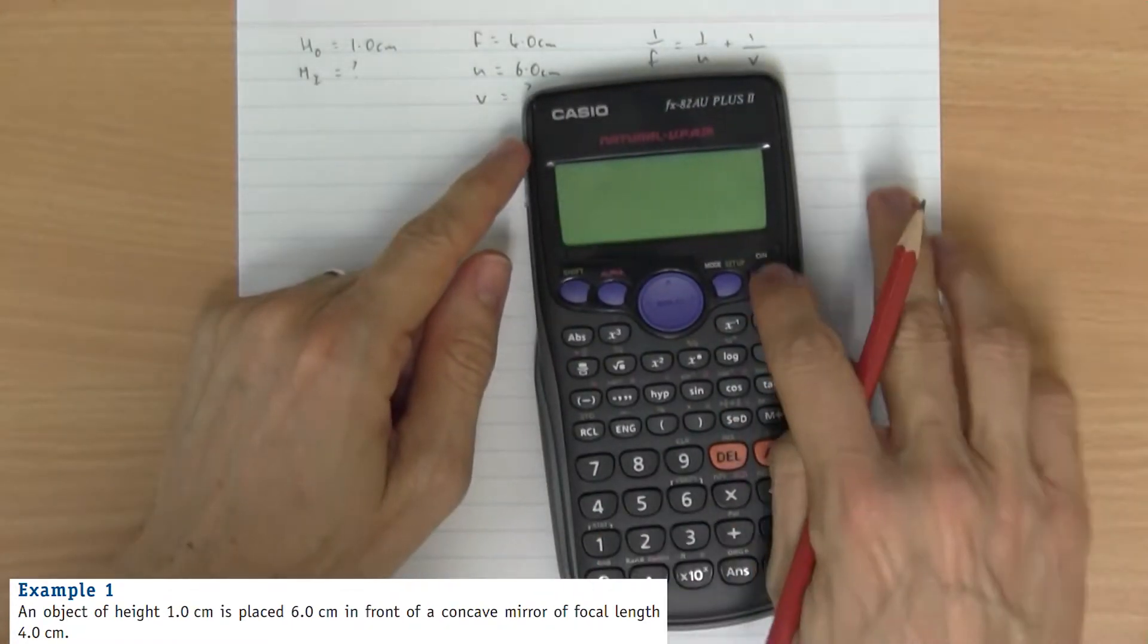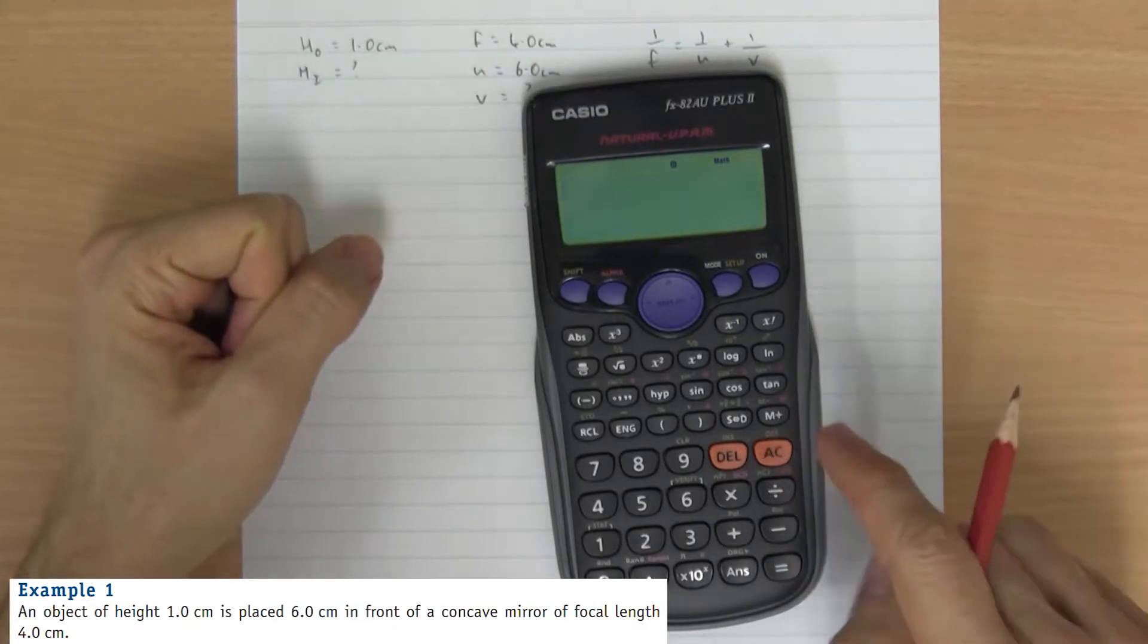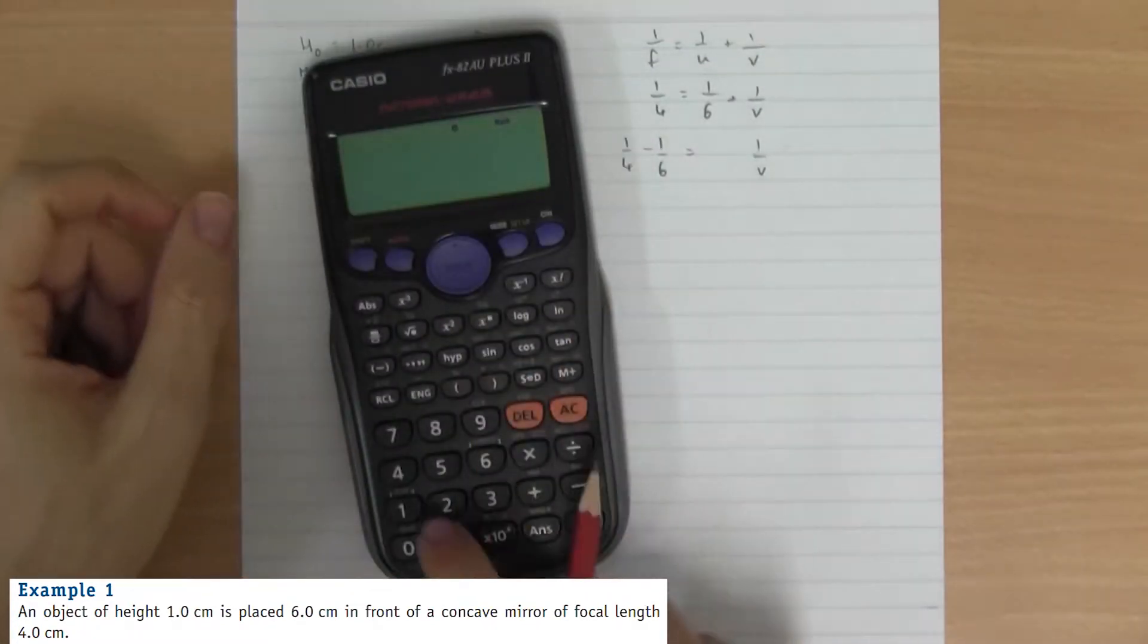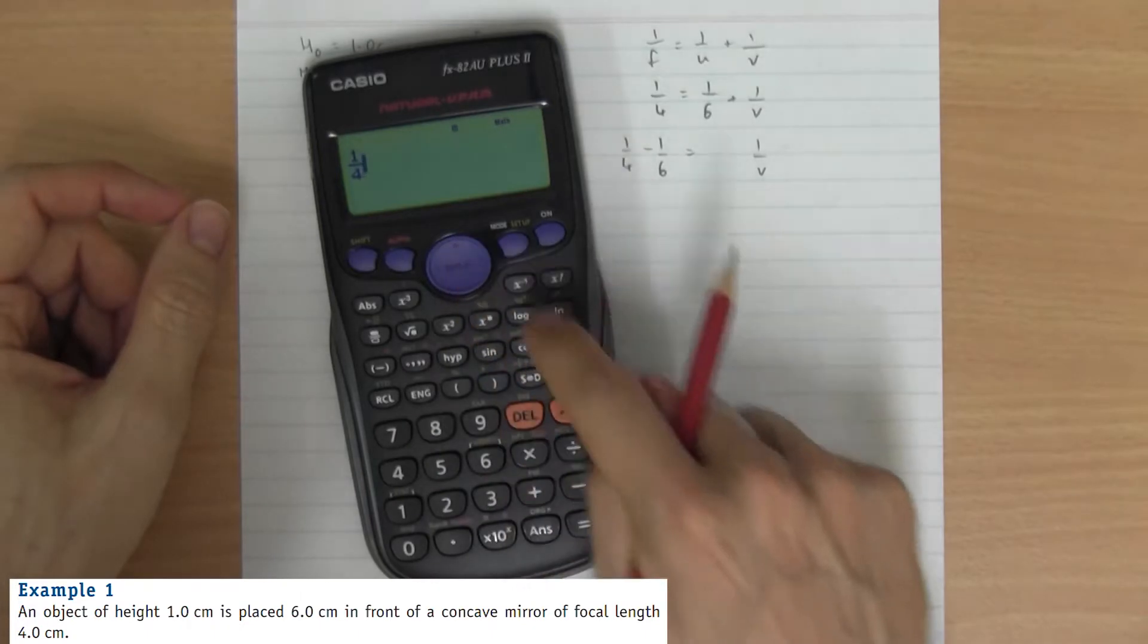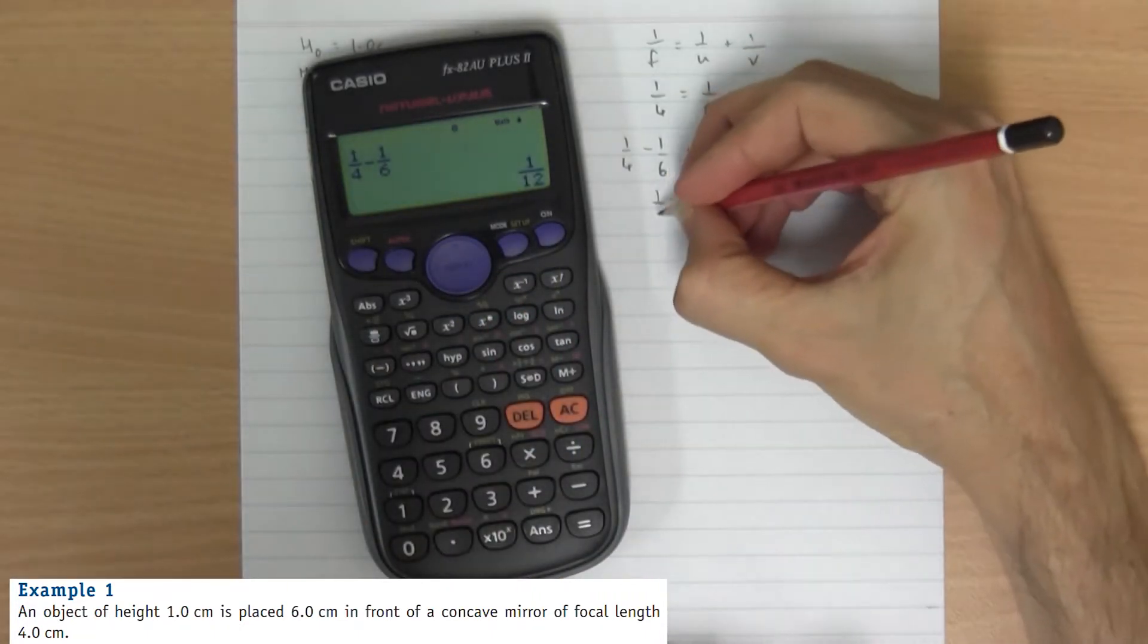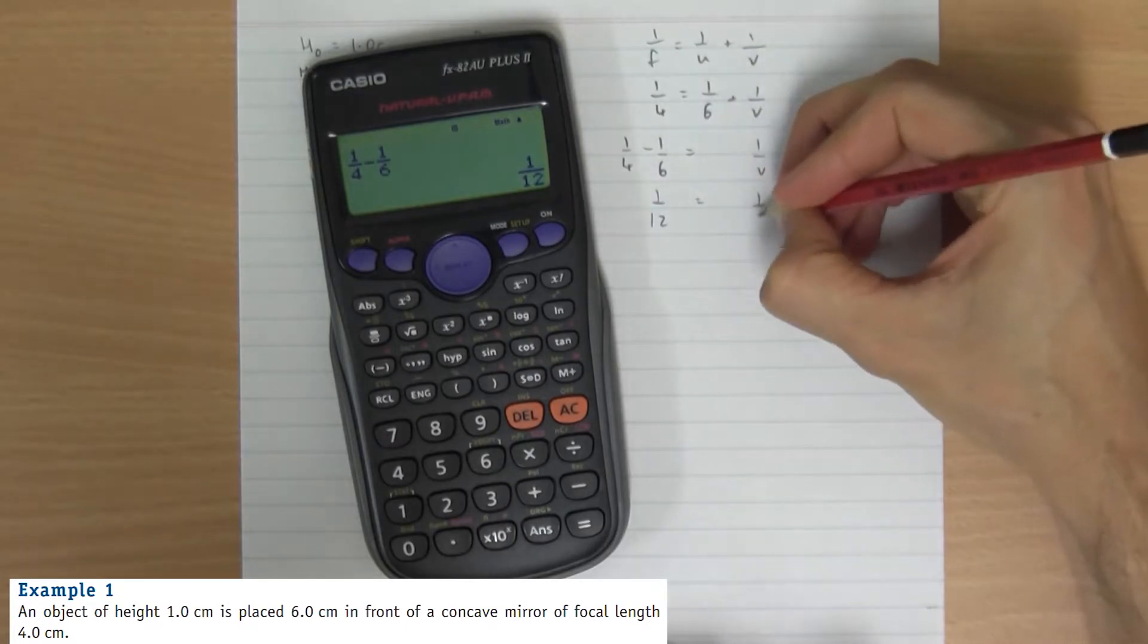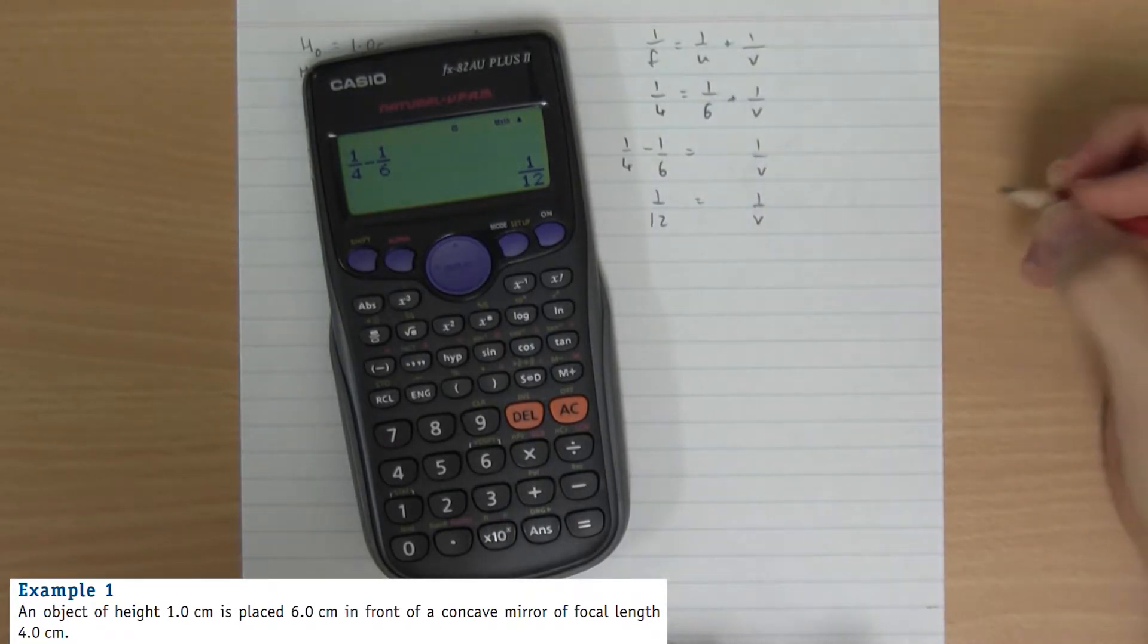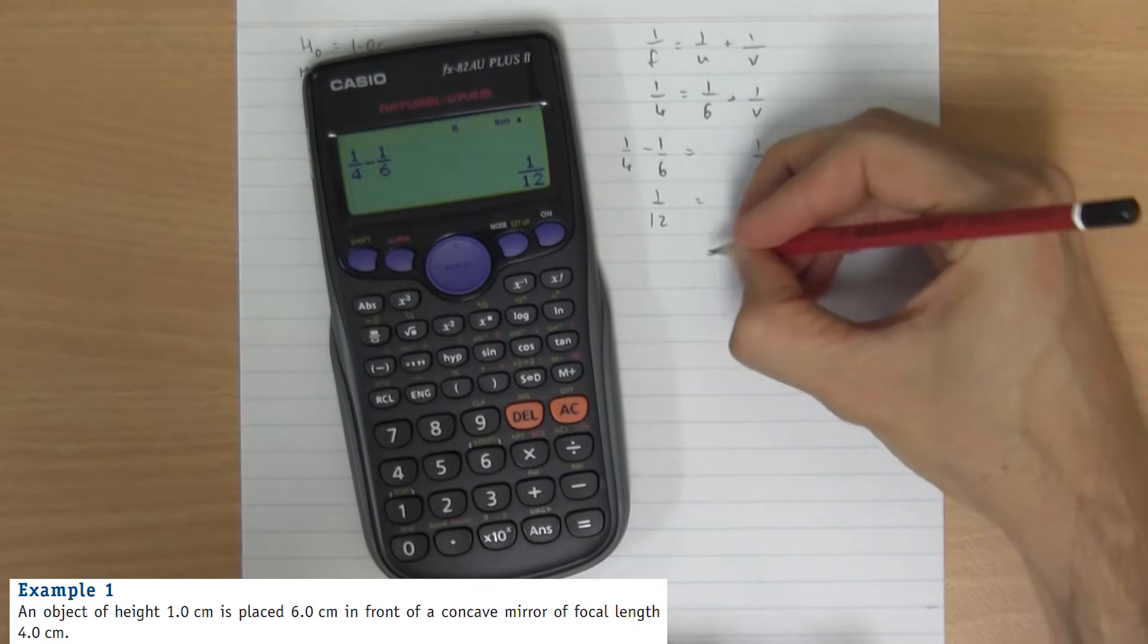If you don't like fractions, just get your calculator out. What is a quarter minus a sixth? That's a twelfth. If one over V is one twelfth, then V must be twelve.